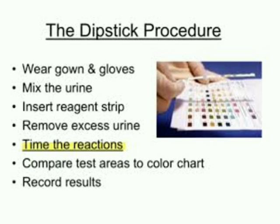Procedure for chemical analysis using dipstick: first, be safe by wearing a gown and gloves. Mix the urine, then insert the reagent strip and remove excess urine. Time the reaction, compare the test areas to the color chart, and lastly record the result.